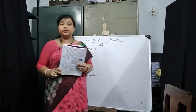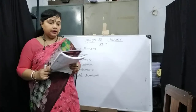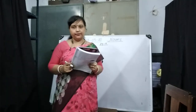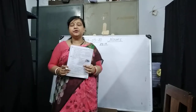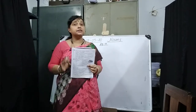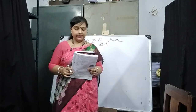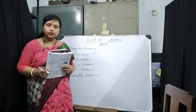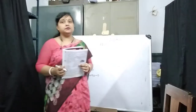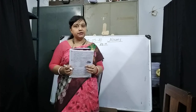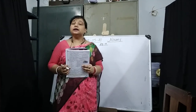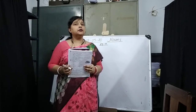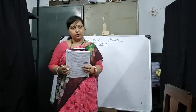Today we will read about nouns. There are different kinds of nouns, and today we will read about six kinds of nouns. Number one, common nouns. Number two, proper nouns. Number three, abstract nouns. Number four, collective nouns. The other two are countable nouns and uncountable nouns.